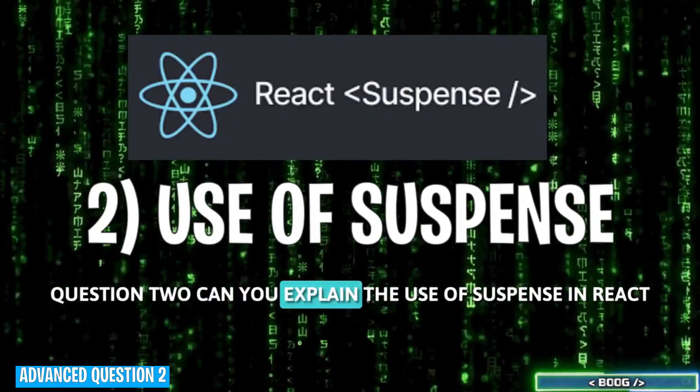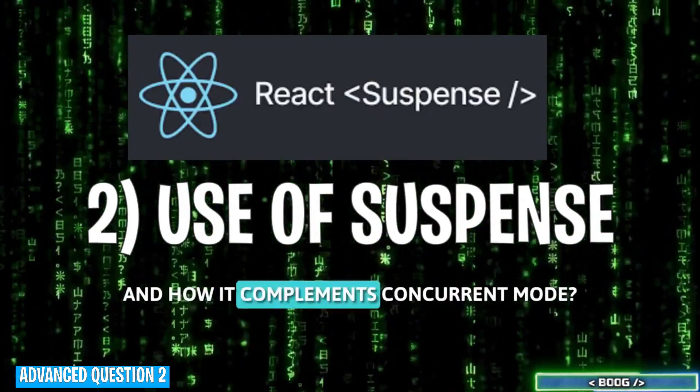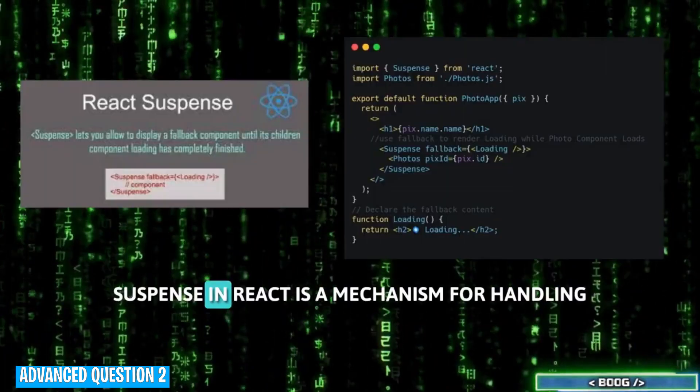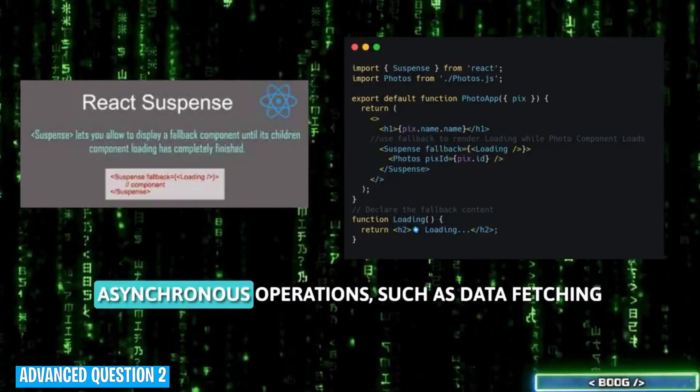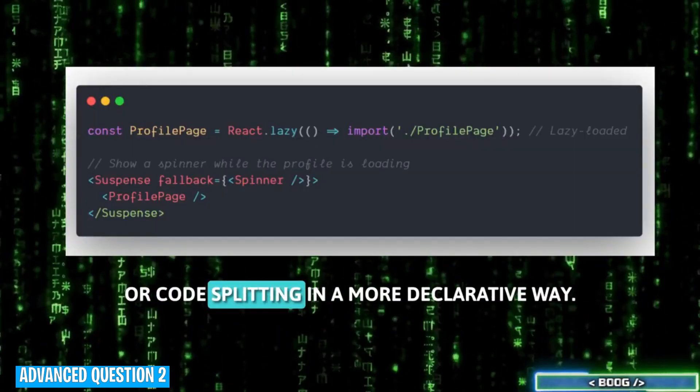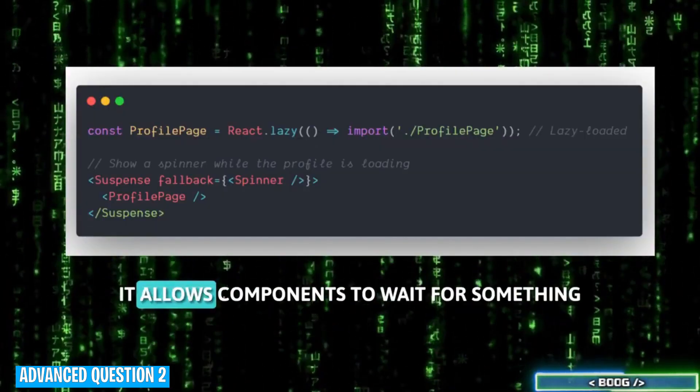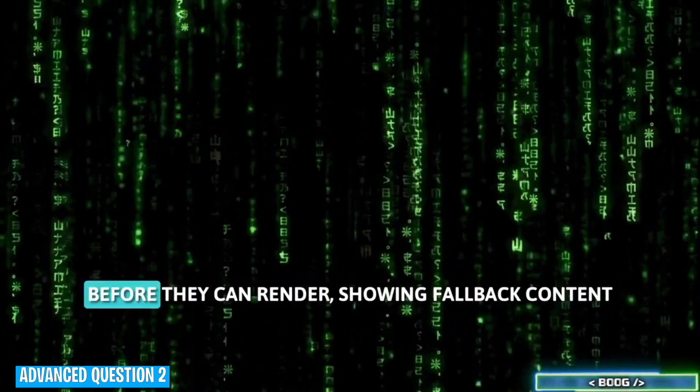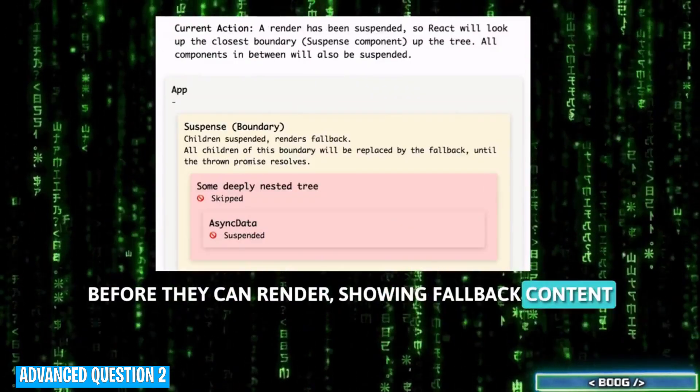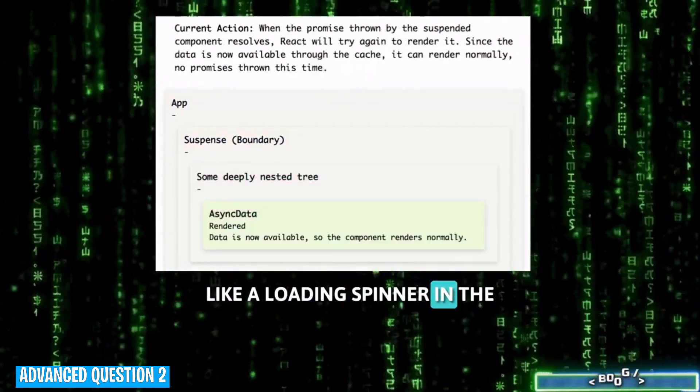Question 2. Can you explain the use of suspense in React and how it complements concurrent mode? Suspense in React is a mechanism for handling asynchronous operations such as data fetching or code splitting in a more declarative way. It allows components to wait for something before they can render, showing fallback content, like a loading spinner, in the meantime.